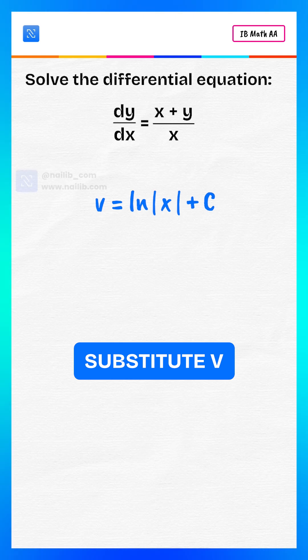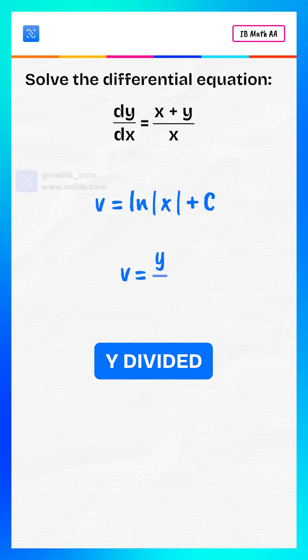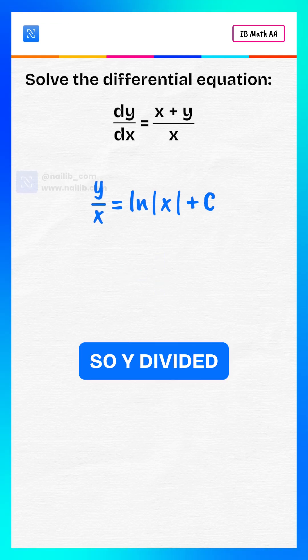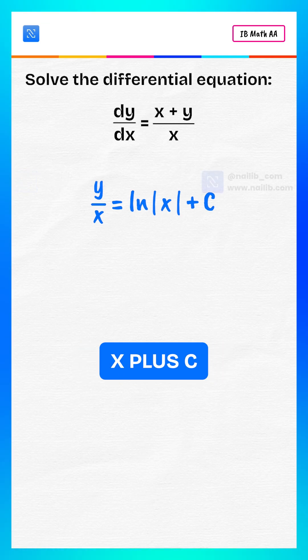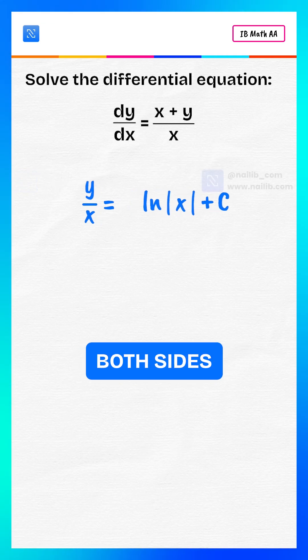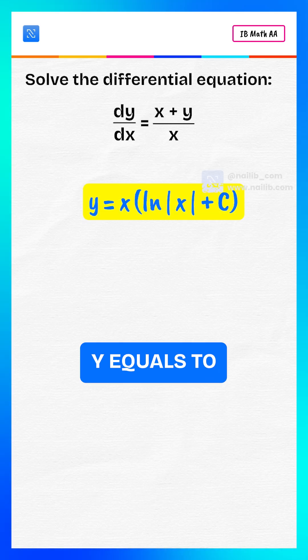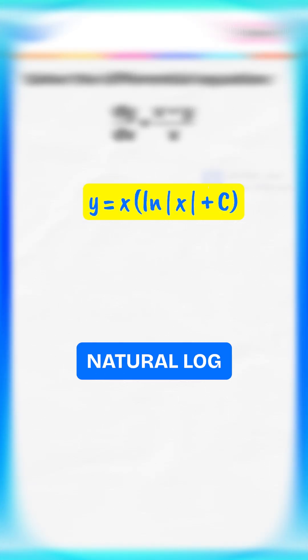Back substitute v equals y divided by x. So y divided by x equals natural log of absolute x plus c. Multiply both sides by x. y equals x times natural log of absolute x plus constant c.